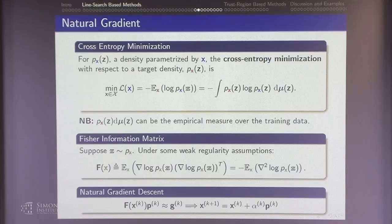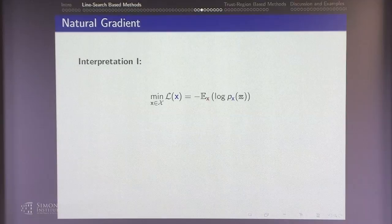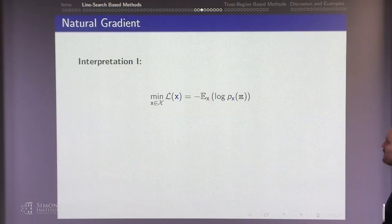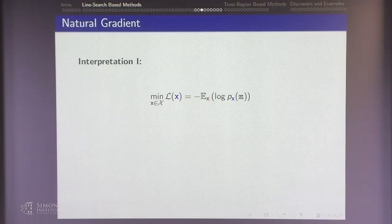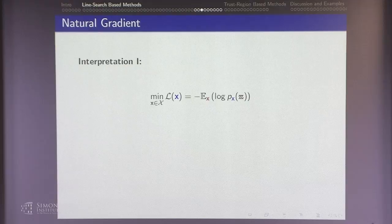Let me interpret this. For cross-entropy minimization, I want to find x (blue) to minimize the cross-entropy against a fixed target (red x). Think of the red as the empirical distribution over data points. Running Newton's method on this: the Hessian of L is the expectation with respect to the fixed distribution of the Hessian of the log likelihood at the blue x. For empirical risk minimization — a finite-sum problem — the Hessian of L is straightforward. But the Fisher matrix uses the distribution at the current iterate, not the training data. This is a very subtle but important distinction.